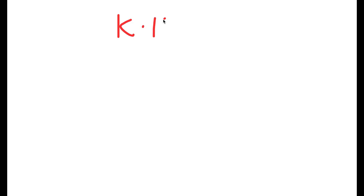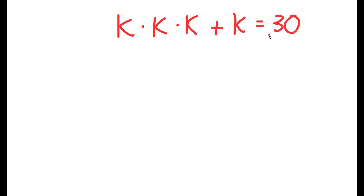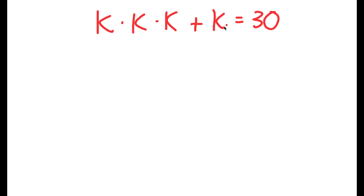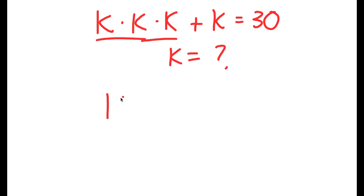In this video, I'm going to solve the equation k times k times k plus k is equal to 30. I want to find the value of k. To start off, k times k times k is the same thing as k to the power of 3. So k to the power of 3 plus k is equal to 30.